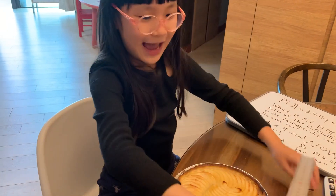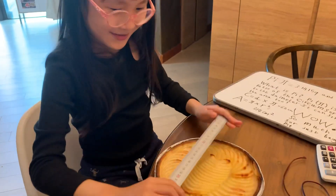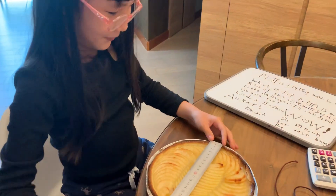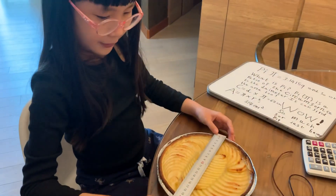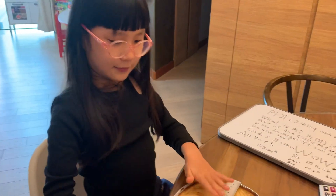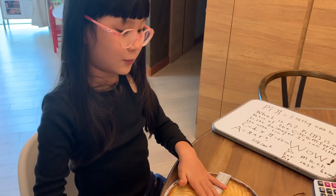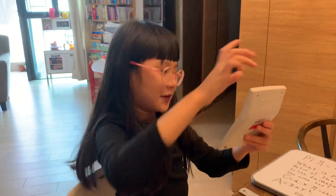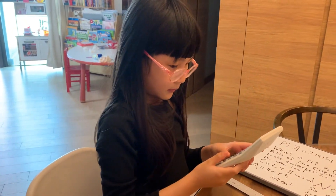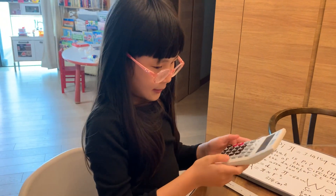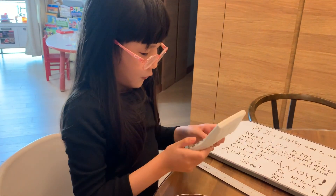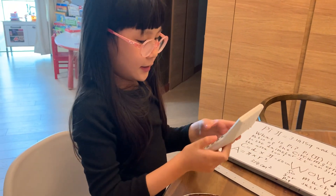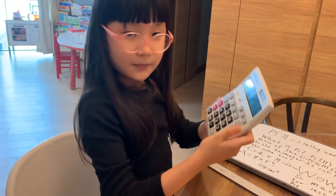Now, I'm going to use an actual pie for this experiment. Of course, I'll have to eat it later. So, if we measure it, it's 20. That's the diameter — the diameter is 20. So, if I use my trusty calculator over here: 20 times 3.14159 equals this.